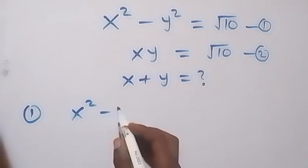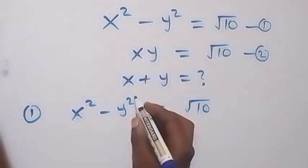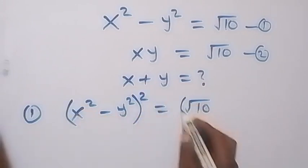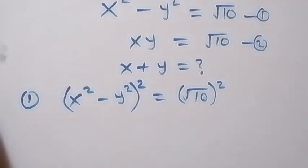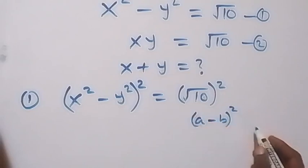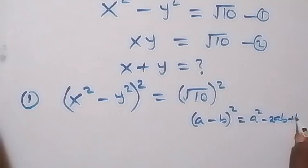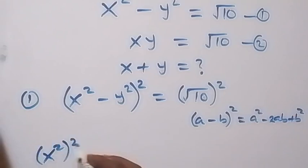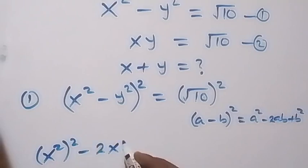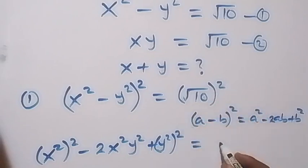From equation 1 we have x squared minus y squared equals 10. From here, let's take the square on both sides. Squaring this side, the expansion follows from the identity (a minus b) squared, which gives a squared minus 2ab plus b squared. Applying this here gives us x squared squared minus 2x squared y squared plus y squared squared.